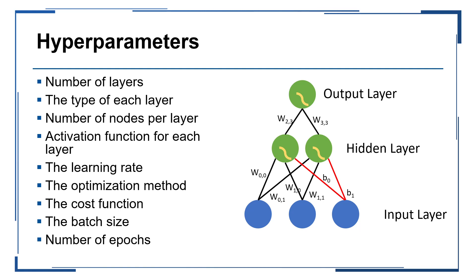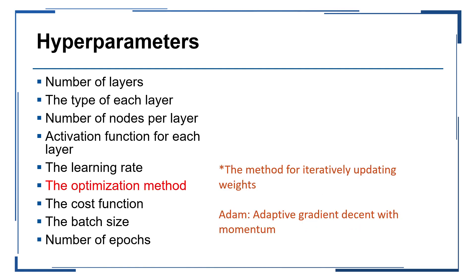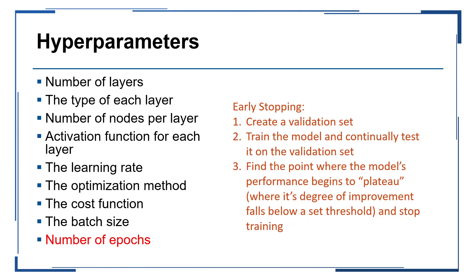Beyond some of the others that we have already touched upon, we can also set something like the optimization method, which determines how the model is iteratively updating its weights with respect to the learning rate. For example, Adam is a popular method which applies adaptive gradient descent with momentum, which is basically just helping the model, helping to protect the model from making bad updates due to outliers within the data.